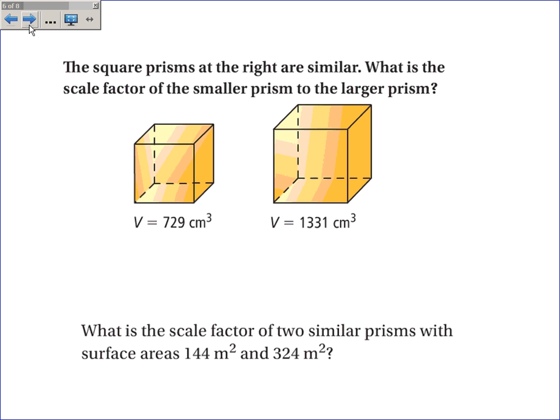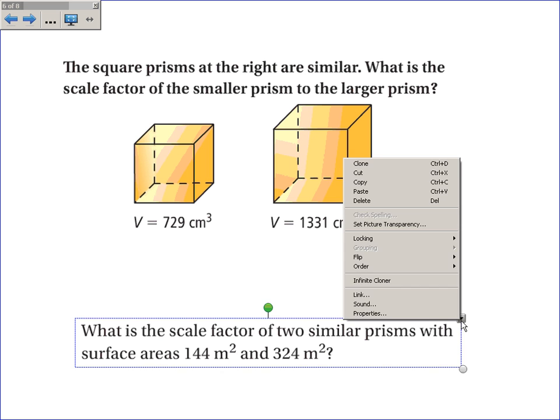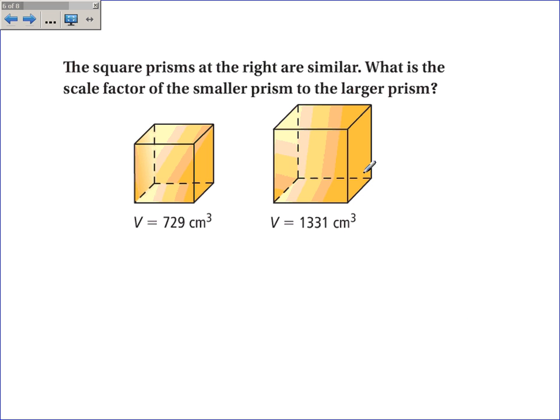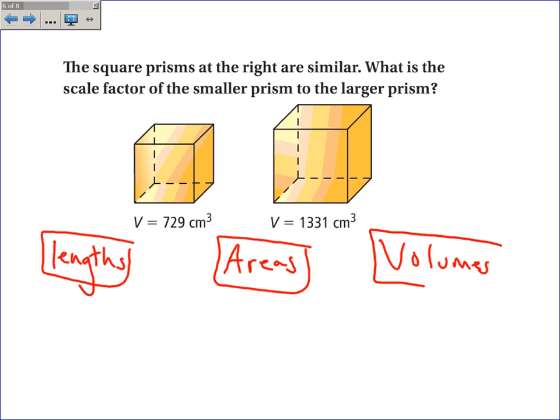The square prisms at right are similar. What is the scale factor of the smaller prism to the larger prism? Now, the question is, what's the scale factor? What I'm given is the ratio of the volumes, 729 over 1331. The first thing I'll do is see if I can simplify that fraction, 729 over 1331 to see if there are any common factors and there aren't any common factors.